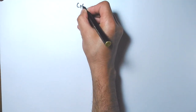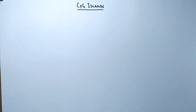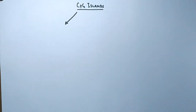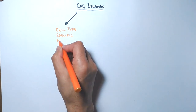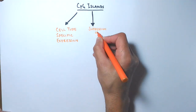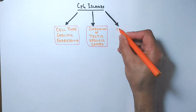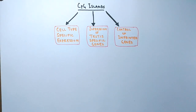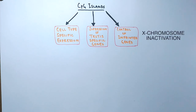What is the function of CpG islands? In general, they regulate gene expression. More precisely, CpG islands regulate cell-type specific expression, suppression of testis-specific genes, control of imprinted genes, and de novo methylation of CpG islands which helps in X chromosome inactivation.